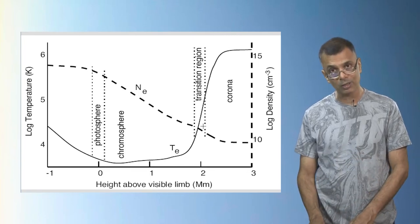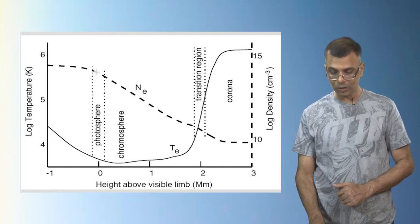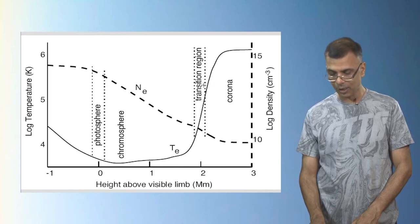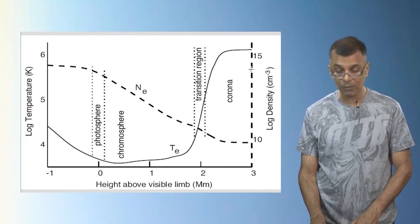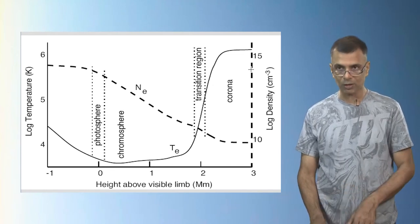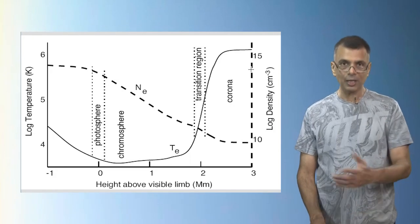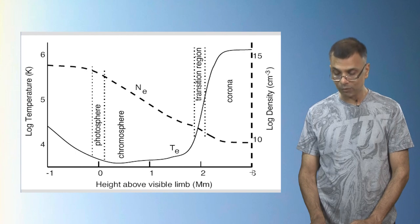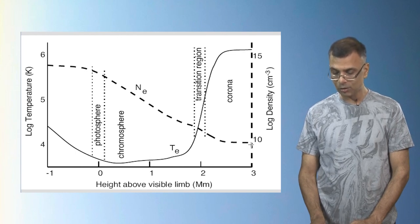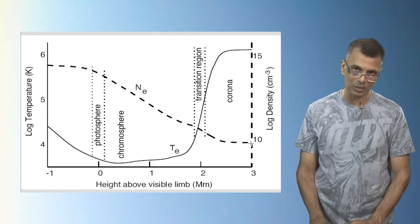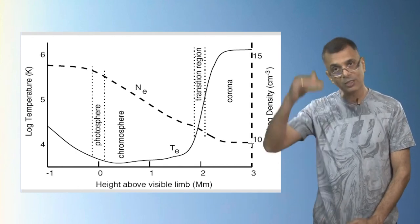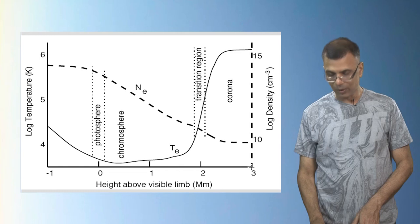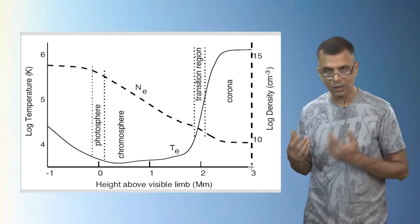Alongside the temperature rise, the density shown by the dashed line drops sharply. At the photosphere the density is around 10^14 to 10^15 particles per centimeter cubed, but by 1,000 megameters above the solar limb it has fallen to as low as 10^9 to 10^10 particles per centimeter cubed. This is the main point: the outer atmosphere of the sun — the corona — is extremely hot but also extremely tenuous.